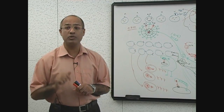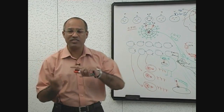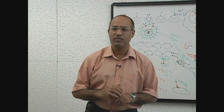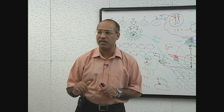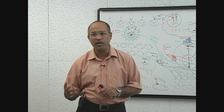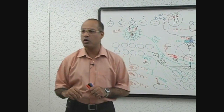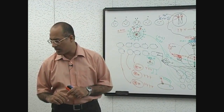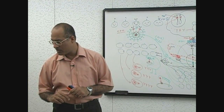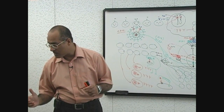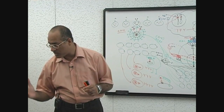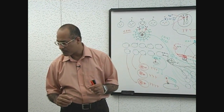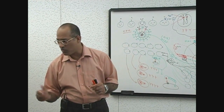Such molecules which facilitate the phagocytosis of bacteria or other particulate matter are called opsonins. An opsonin is a molecule which enhances the phagocytosis of particulate matter.